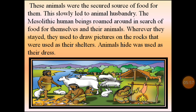They knew fire and its utilities. All these things were mostly found at Bhimbetka and Adamgarh of Madhya Pradesh, Brahmagiri and Karnatganhalli of Karnataka, Baghor and Ganeshwar of Rajasthan, Birbhanpur of West Bengal, Vanaparti of Andhra Pradesh, and Sarai Nahar Rai and Mahadha.